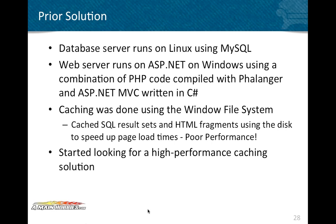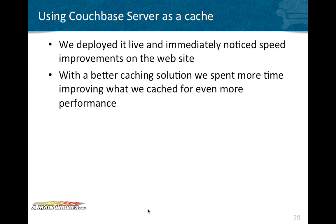We discovered the Windows file system is quite slow compared to Unix or Linux file systems. As the cache filled up with thousands of files, the file system got slower and slower. Sometimes it would take literally 30 minutes to delete all cache files after a major site upgrade. We ended up writing a script to rename the directory so we could get the new site up quickly, then delete old files in the background. We tried moving to a RAM disk on Windows, but it only made it marginally faster.